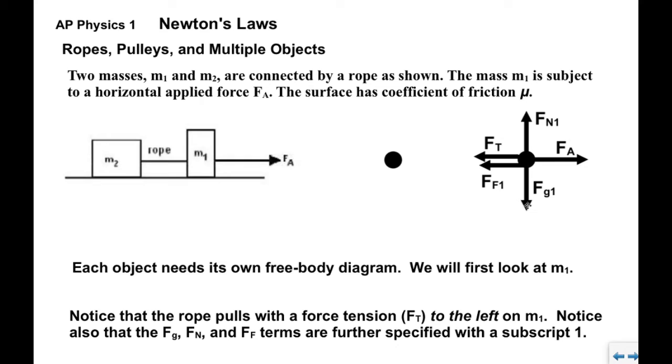We know that Fg pulls down, we have Fn1 the normal force from the surface, and of course we have a friction force opposing the motion, so it points to the left.